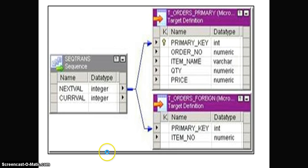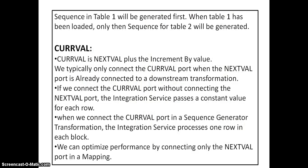Here in this image, I am connecting the next value port to two target transformations. Table 1 will be generated first, meaning the sequence values will be generated for the first target transformation, and then only the sequence will be generated for another target transformation. Coming to the current value port, we typically only connect it when the next value port is already connected to a downstream transformation. If we do not connect the current value port, the integration service passes a constant value for each and every row, meaning all values for that particular column will be the same.